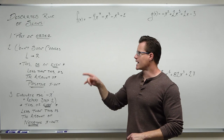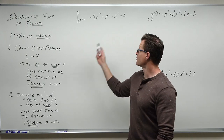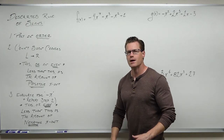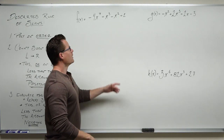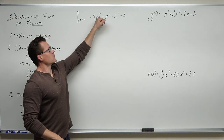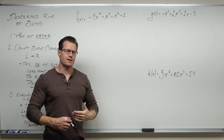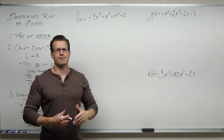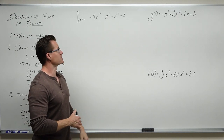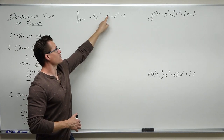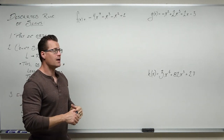Then we count the number of sign changes from left to right. So let's look at our first example. First we check order: order means your exponents are decreasing until you have a constant. So seven, three, two, zero — that's fantastic. That's what we want.